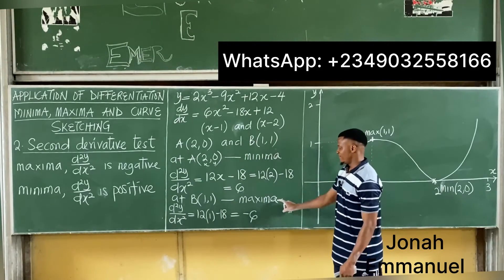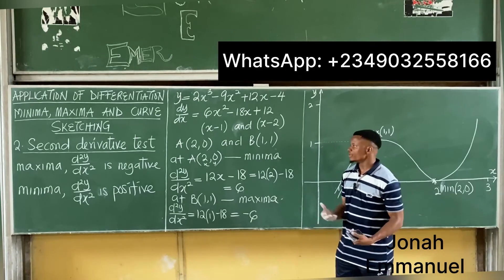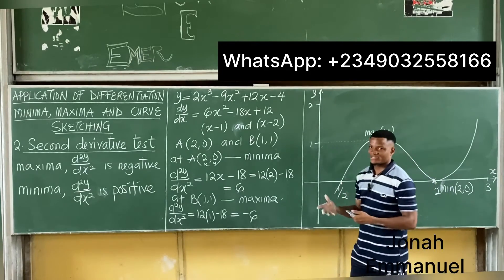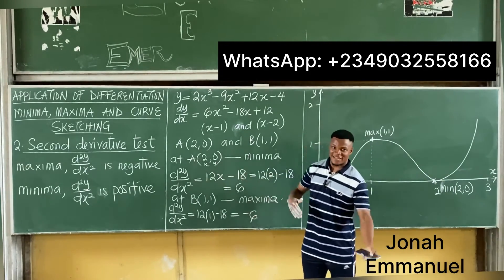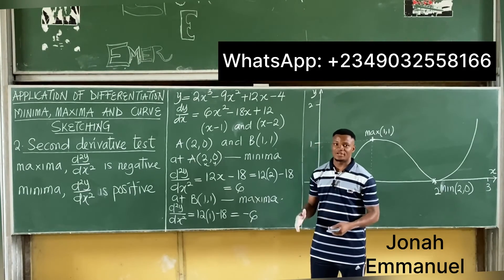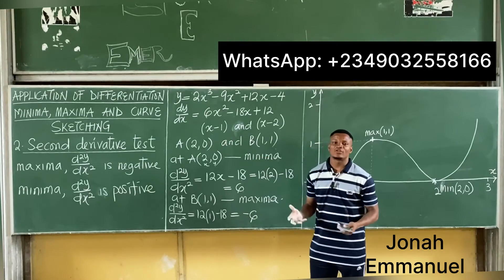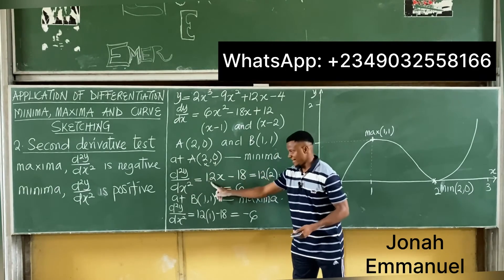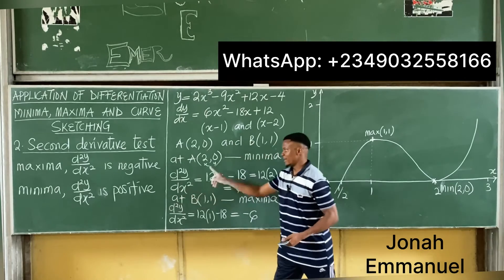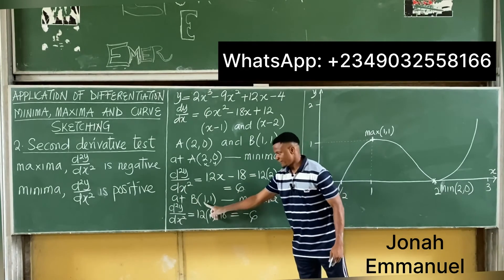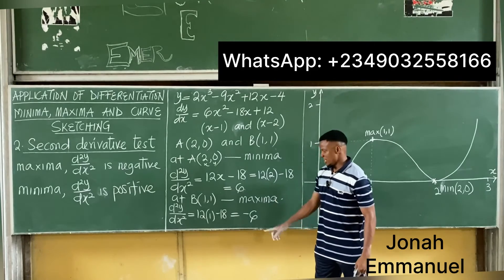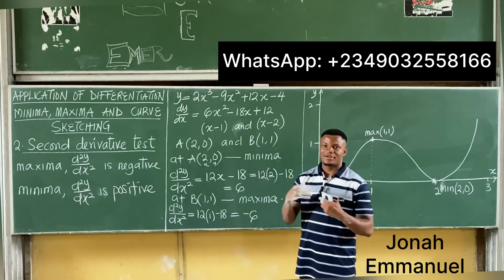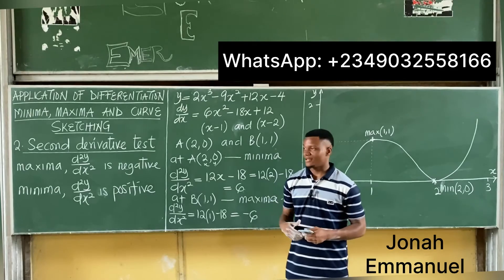Once you've confirmed your minima and maxima using the second derivative test, you find the roots and sketch the curve. Notice the difference: with the first derivative test you look for left-hand and right-hand values. With the second derivative test, that's not necessary — just substitute the x value into d²y/dx². If positive, it's a minima; if negative, it's a maxima. The second derivative test is faster, shorter, and easier.